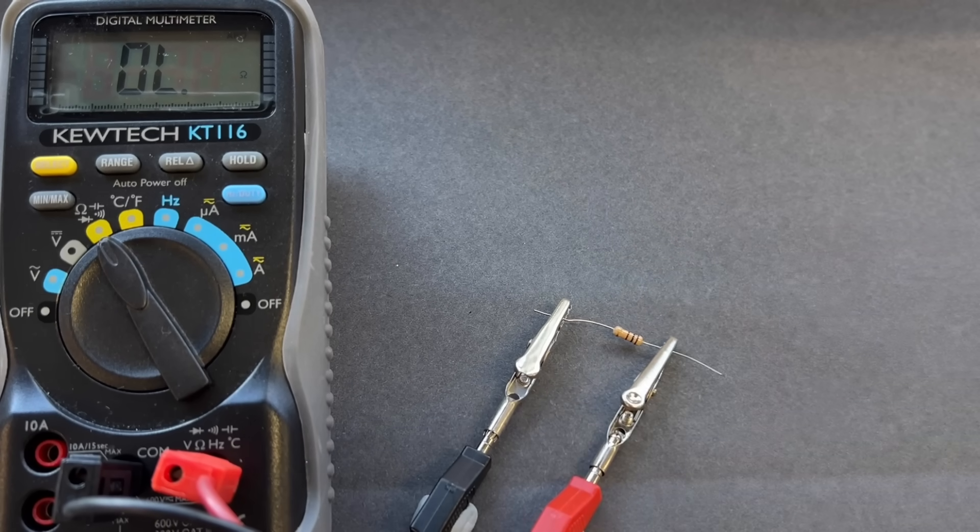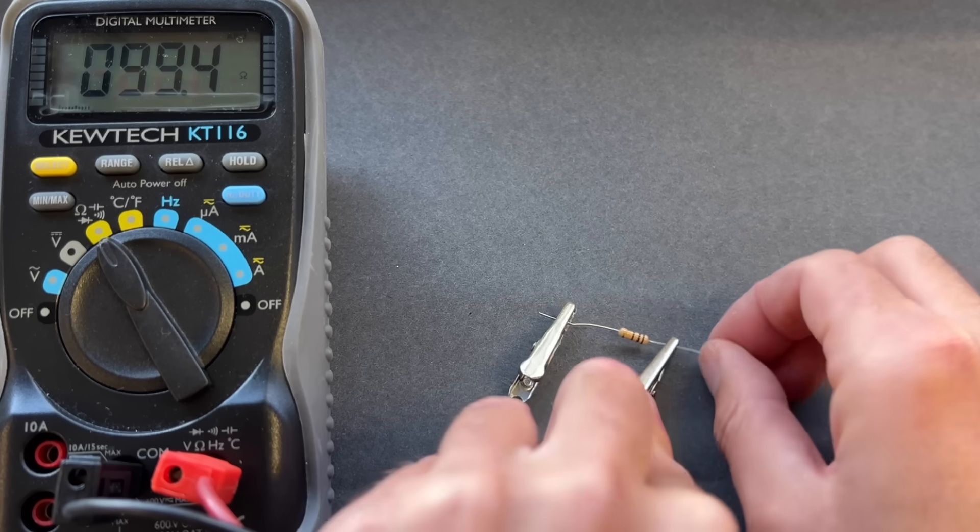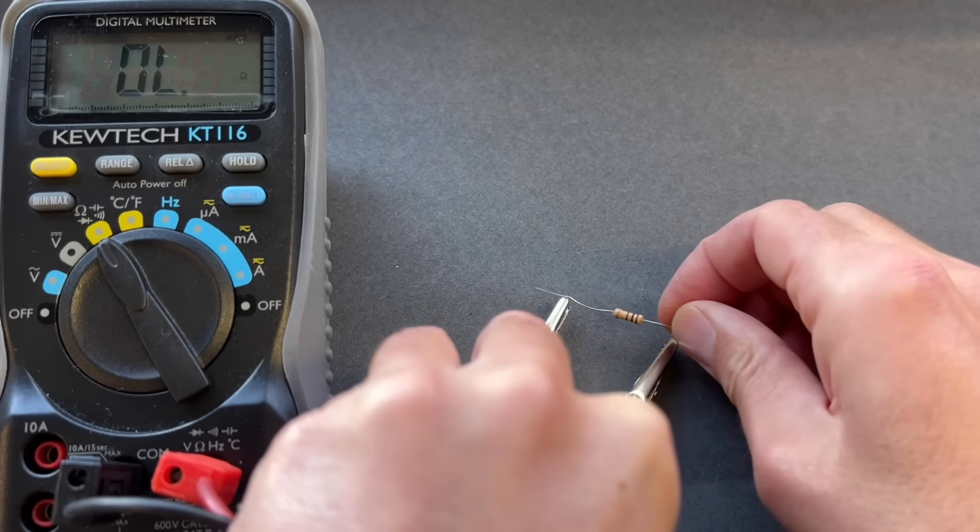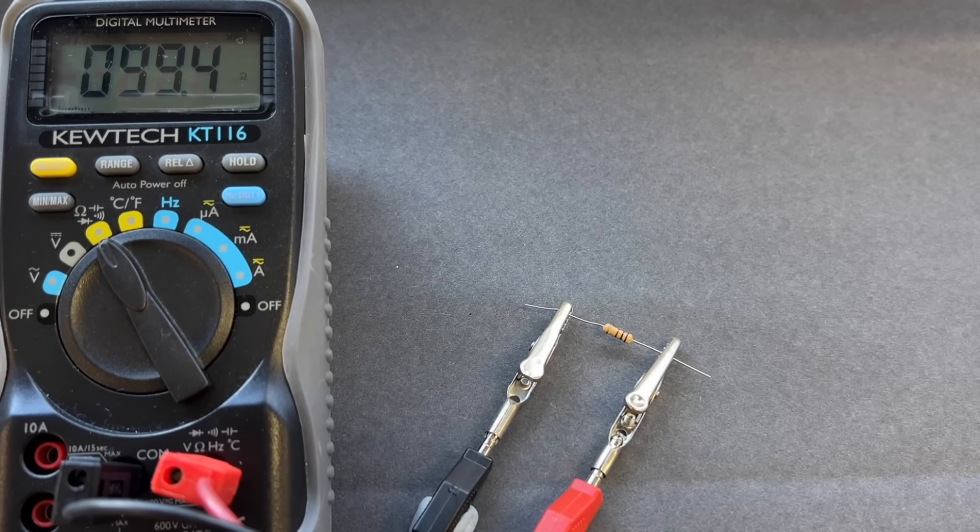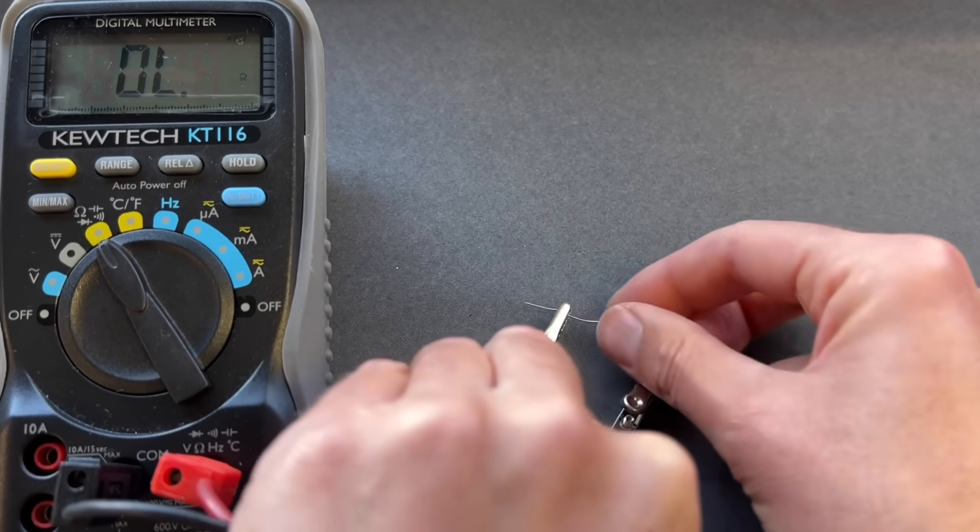You can see there's a bit of variation between them. I won't bore you with showing you every single measurement, but I found that the average resistance of all the resistors, all 12 resistors, was 98.9 ohms.